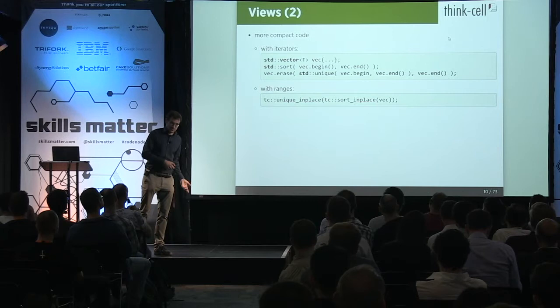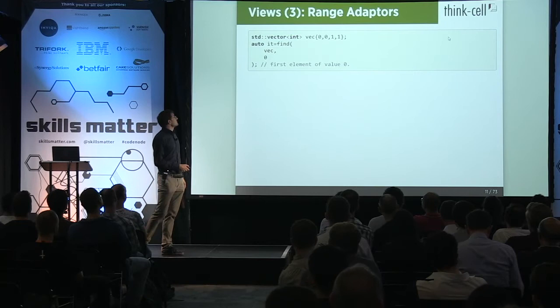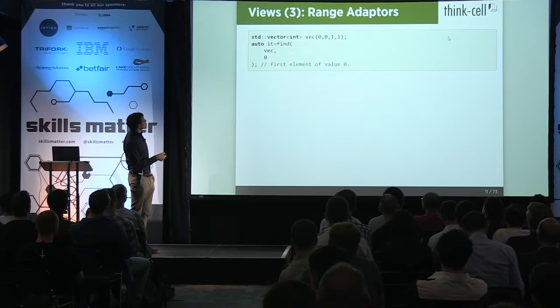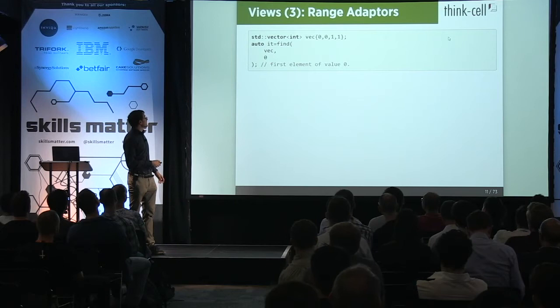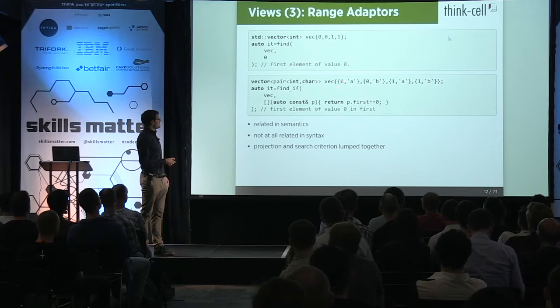More interesting views: we have range adapters. You have a vector and you do a find for zero, which gives you the first element with value zero. On a more elaborate vector of pairs of a number and a character, if you want to find based on the first element you'd write find_if with a lambda like p.first == 0. So far so good. But these two are related in semantics — they both look for zeros — yet the syntax is completely different. That's ugly.